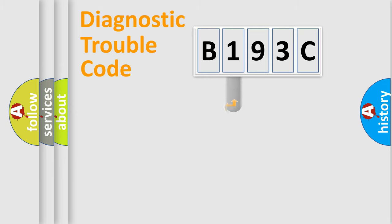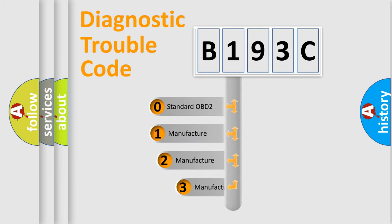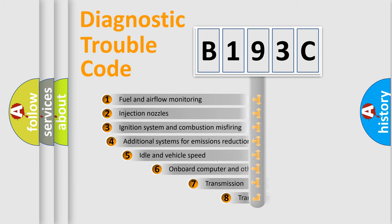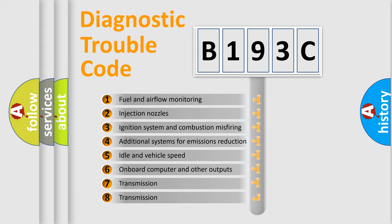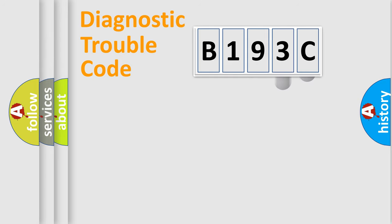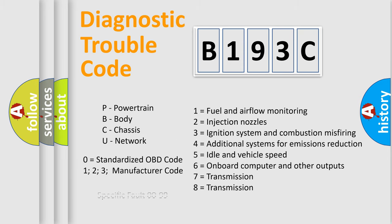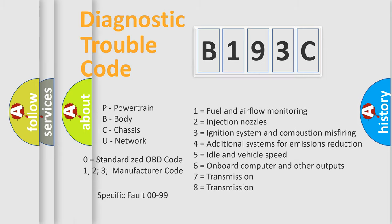This distribution is defined in the first character of the code. If the second character is expressed as zero, it is a standardized error. In the case of numbers 1, 2, or 3, it is a more specific car-manufacturer expression. The third character specifies a subset of errors, and this distribution is valid only for the standardized DTC code. Only the last two characters define the specific fault of the group.